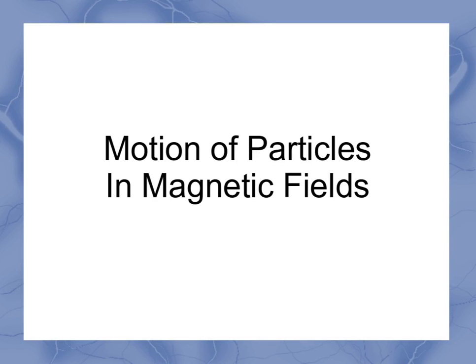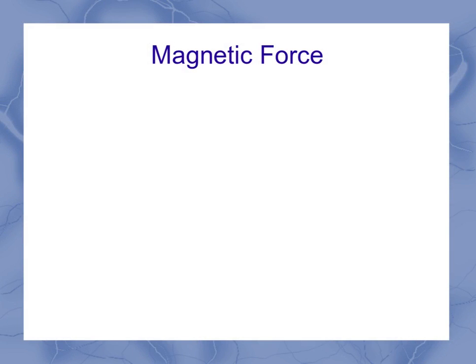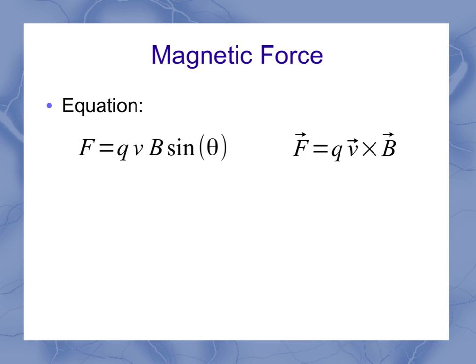So now we have enough information to look at the motion of particles in magnetic fields. We're going to start by looking at our equation for the magnetic force, which we can express either as qvb sine theta or qv cross b if we're using the vector cross product notation. But regardless of which equation we use, what we see is that the direction is always perpendicular to the velocity and the magnetic field.